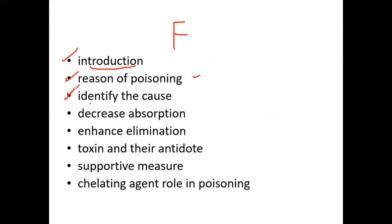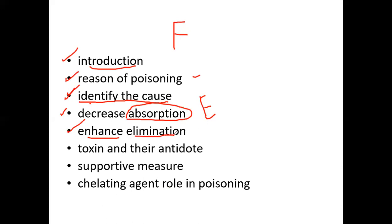The main approach in toxicology is to identify the cause of poisoning, because if we identify the cause we can manage the patient accordingly. The next approach is to decrease the absorption of the poison. We can decrease absorption through induction of vomiting, gastric lavage, and using the natural antidote, activated charcoal.